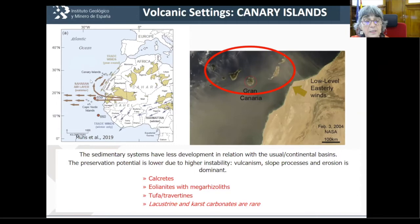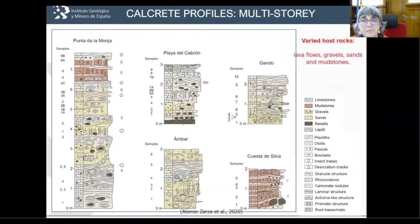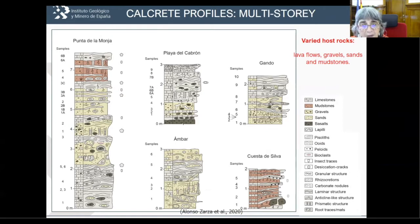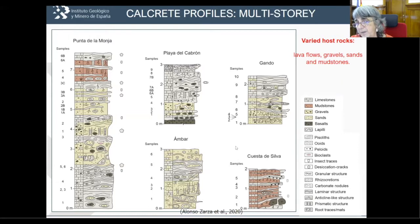The Saharan dust plume carries a lot of calcium to the islands. Calcrete profiles in the Canary Islands are impressive — thick, in this case more than seven meters. They are multi-story: one profile forms, then another modifies it — compound profiles — and sometimes simpler. There is a wide variety of profiles, and the host rock is basalt — but there are also lava flows, gravels and sands with volcanic fragments, mudstones with gravel fragments, and near the sea some bioclasts.